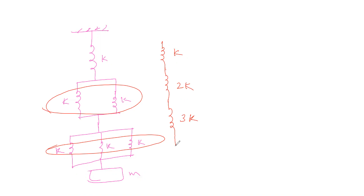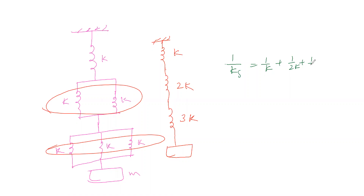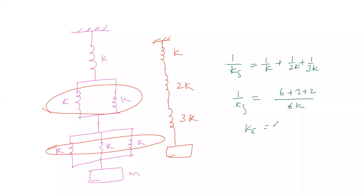For the series combination of k, 2k, and 3k: 1/ks = 1/k + 1/2k + 1/3k. Taking LCM as 6k: (6 + 3 + 2)/6k = 11/6k. Therefore ks = 6k/11.